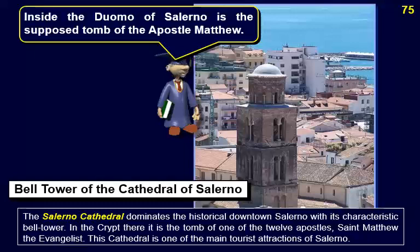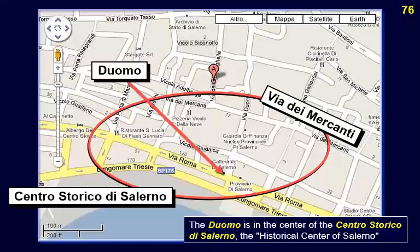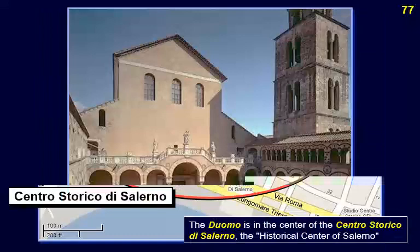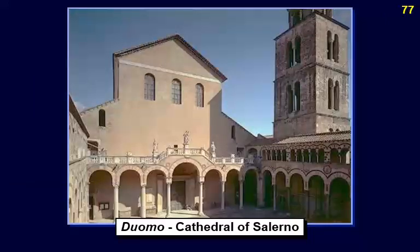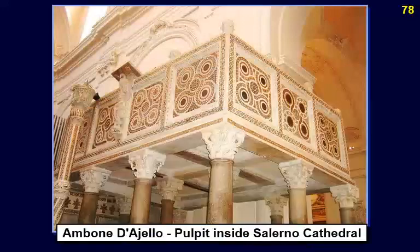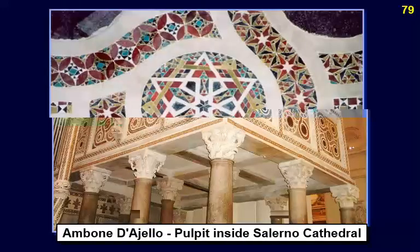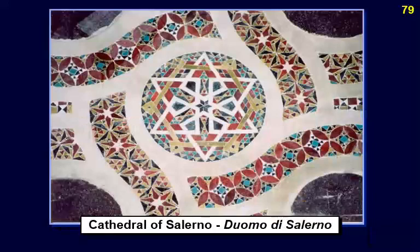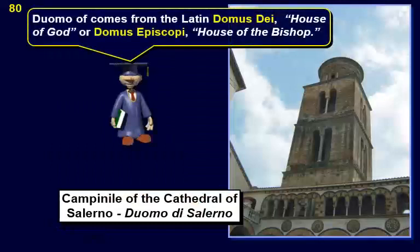In the crypt of the Salerno Cathedral is the tomb of one of the twelve apostles — Saint Matthew the Evangelist. This cathedral is one of the main tourist attractions of Salerno. The Duomo is in the center of the Centro Storico. The word 'Duomo' derives from the Latin word 'domus,' meaning 'house,' as a cathedral is the house of God — Domus Dei.